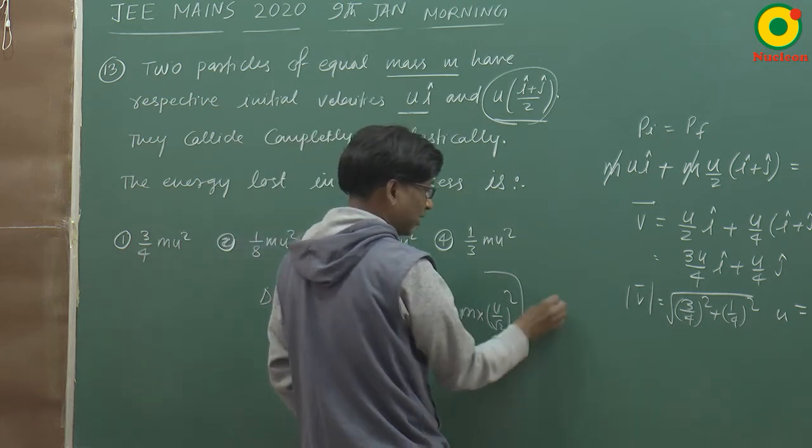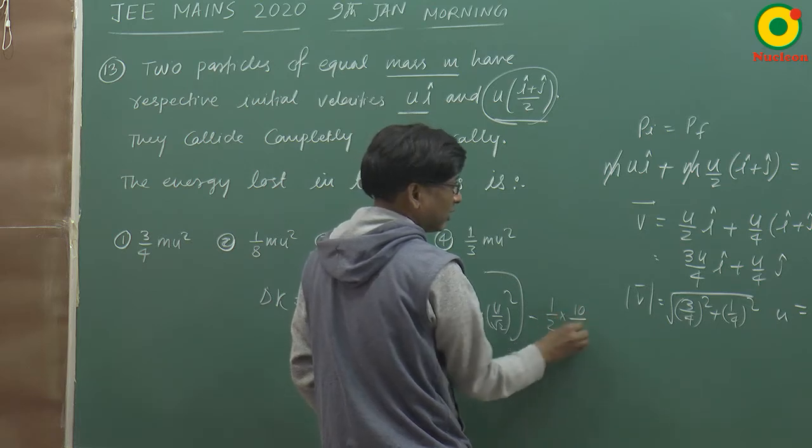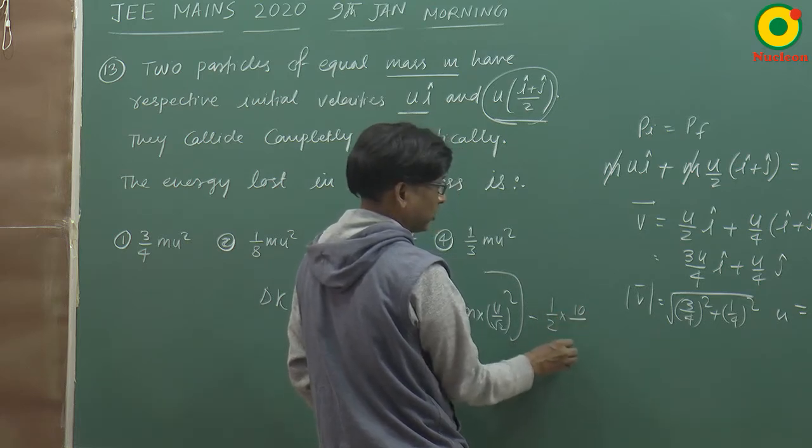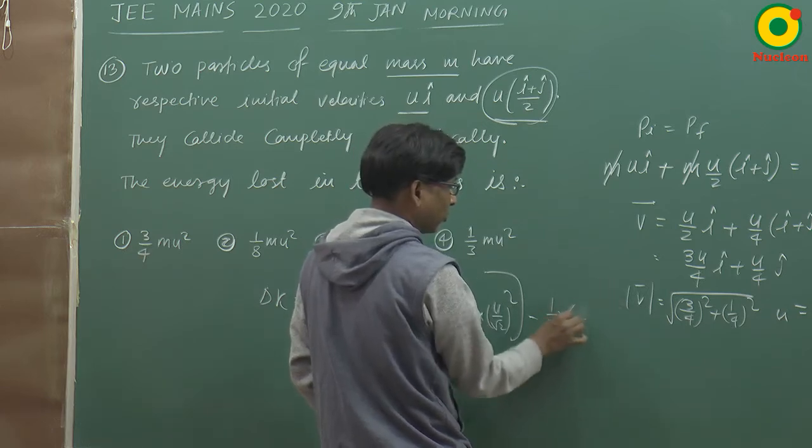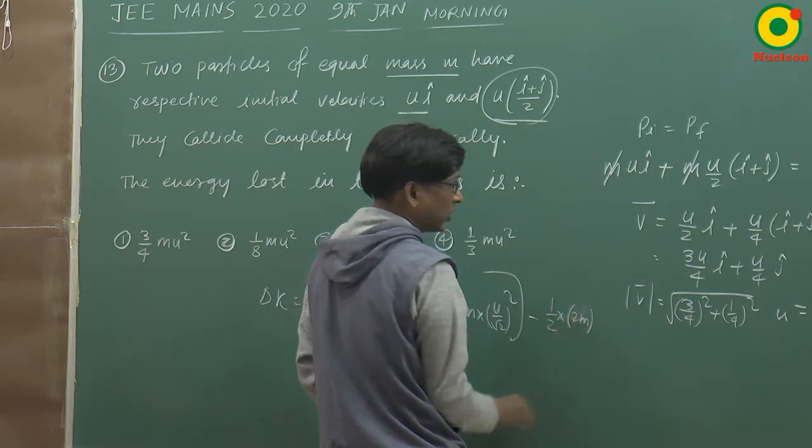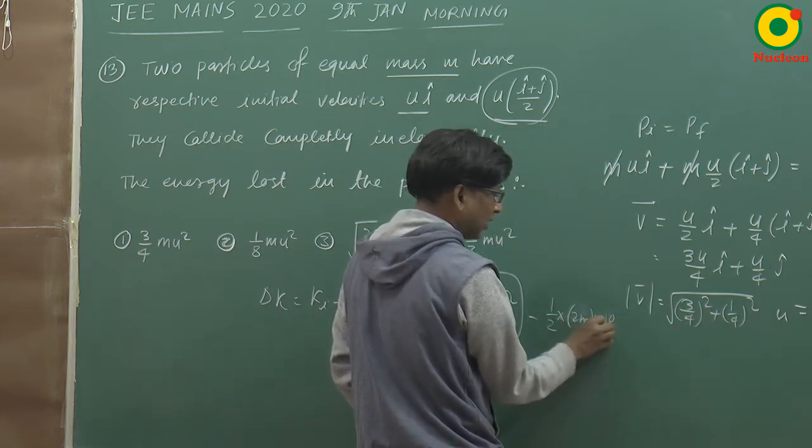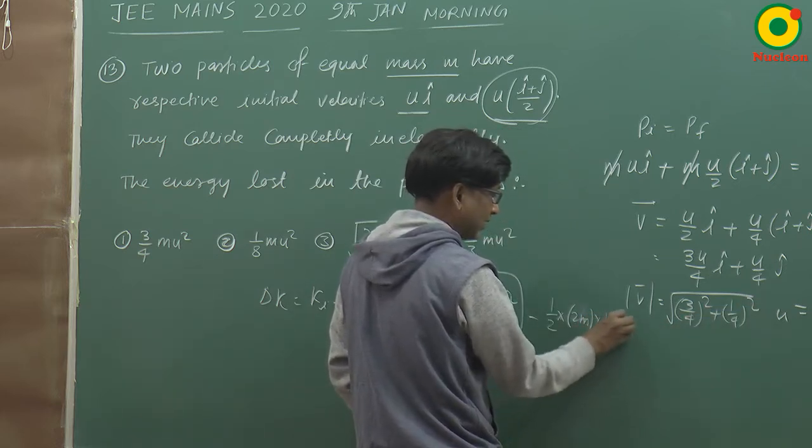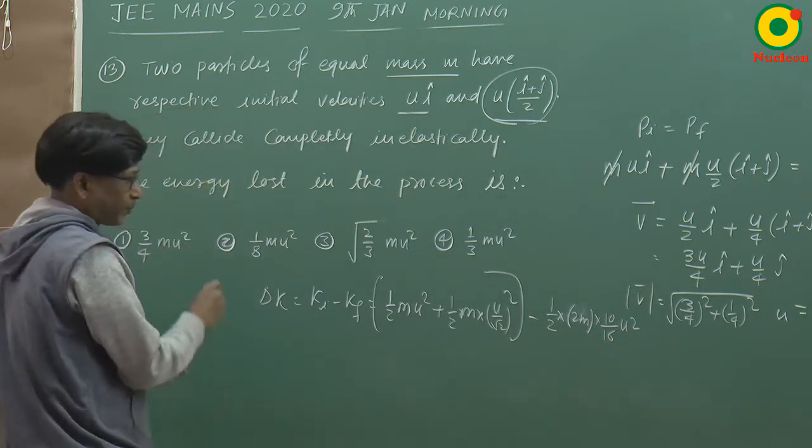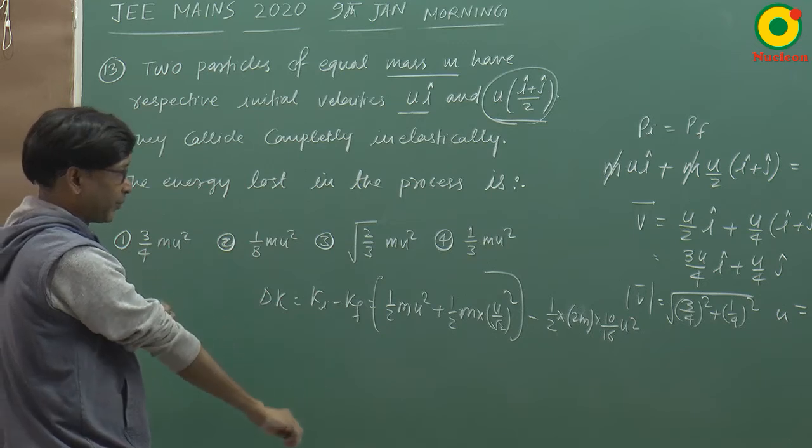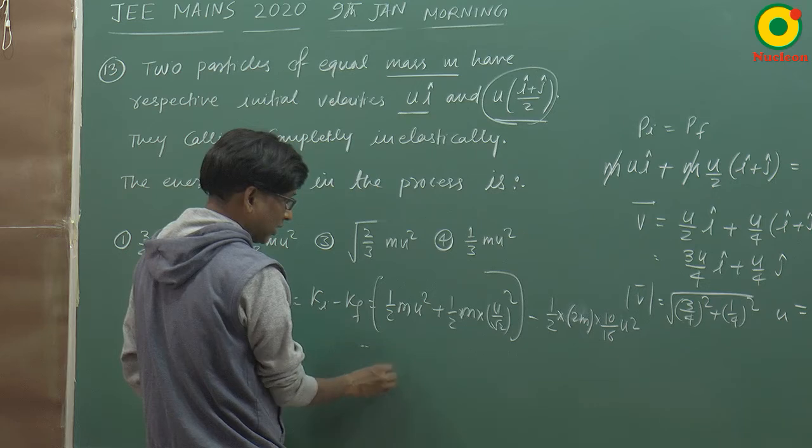And for final, we write (1/2) times mass 2m times this velocity squared. This becomes 10 divided by 16, u squared. Now if we solve this, we'll see: